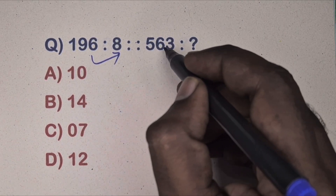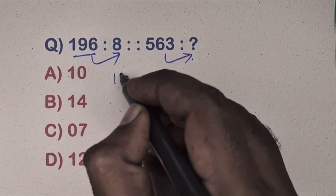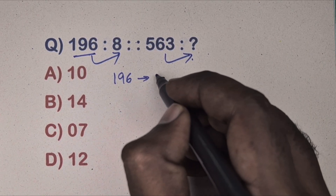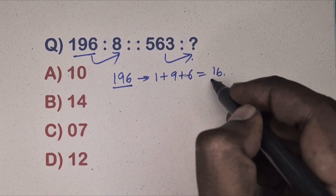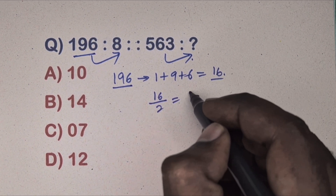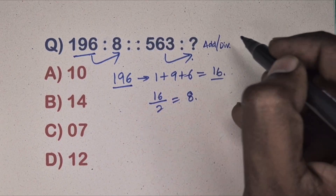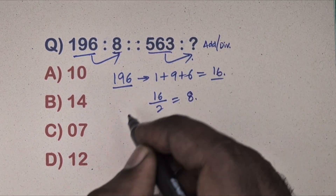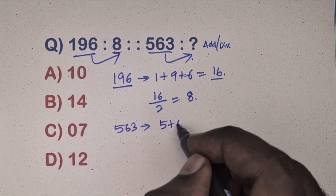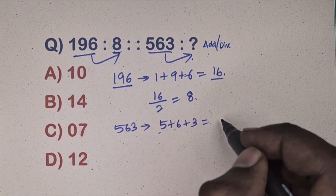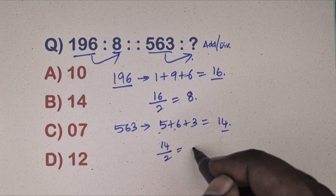Next question: 196 is related to 8, and 563 is related to which number? Options are given. Take 196 — add the digits: 1 plus 9 plus 6 equals 16, then 16 divided by 2 equals 8. This is an addition and division combination rule. Take 563 — add the digits: 5 plus 6 plus 3 equals 14, then 14 divided by 2 equals 7. So 7 is the correct answer.